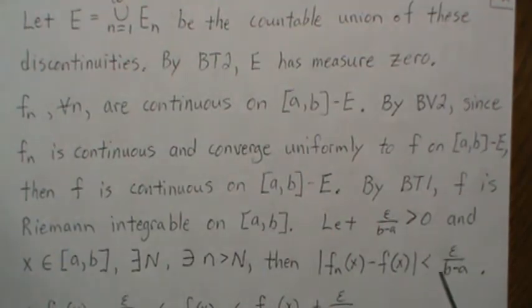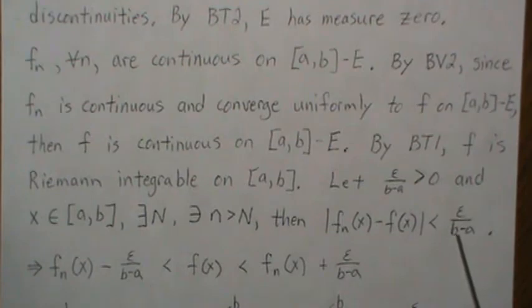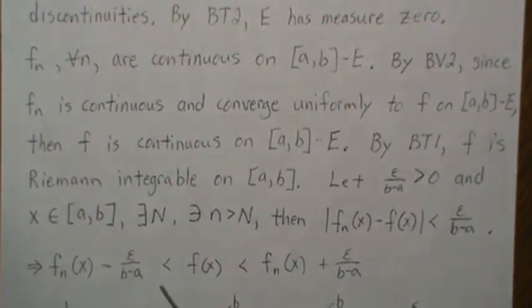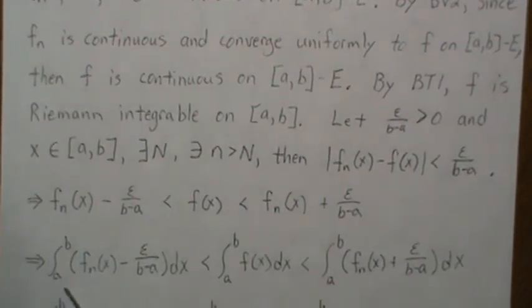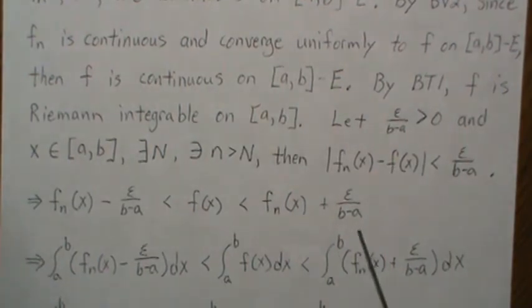This absolute value inequality can be written like this. You take the minus of it here, and then of course this can be f(x) minus f_n(x)—it's the same thing when you're talking about absolute value. Then you add f_n everywhere and you get this inequality.